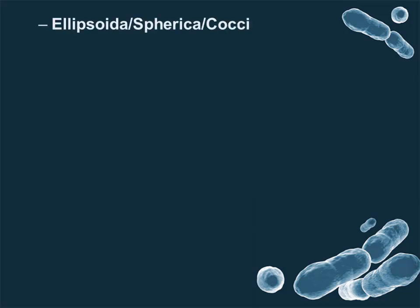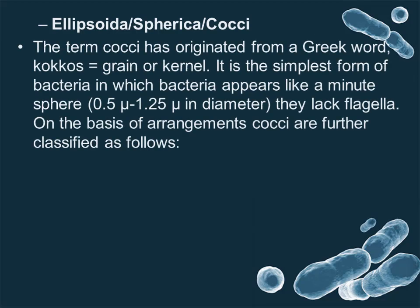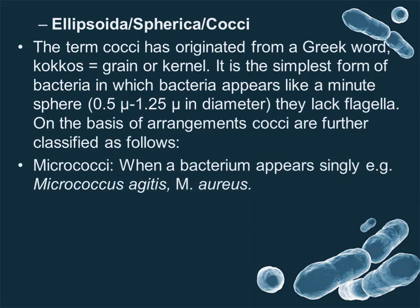Ellipsoidal, spherical, or cocci: the term cocci originated from the Greek word 'coccus,' meaning grain or kernel. It is the simplest form of bacteria, appearing like a minute sphere, 0.5 to 1.25 microns in diameter. They lack flagella. On the basis of arrangement, cocci are further classified as: Micrococcus — when a bacterium appears singly, for example, Micrococcus agetus or Micrococcus aureus.